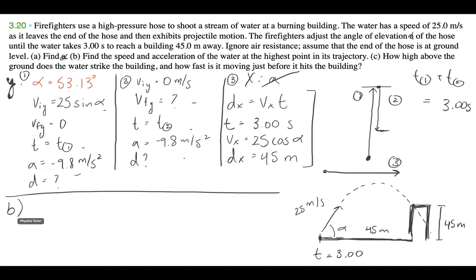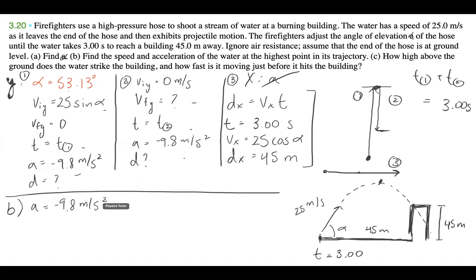For Part B, we want to find the speed and acceleration of the water at the highest point in its trajectory. Acceleration is super easy — as long as we're on planet Earth, it's going to be negative 9.8 meters per second squared. That's not going to change at the top; it's not turning into a different acceleration.